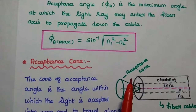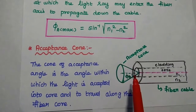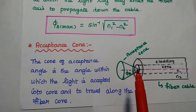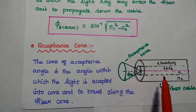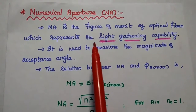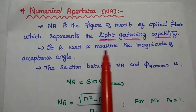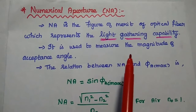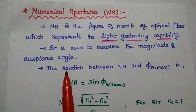The acceptance cone is obtained by rotating the acceptance angle with respect to the fiber core axis. The cone of acceptance is the angle within which light is accepted into the core medium and travels along the fiber core for better communication. The next parameter is numerical aperture, which is an important figure of merit of optical fiber representing the light-gathering capability of the fiber.